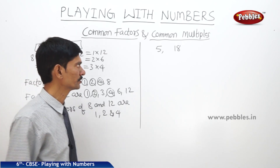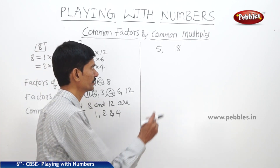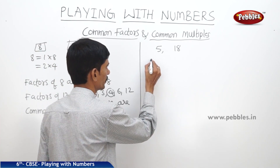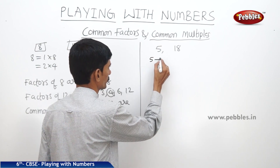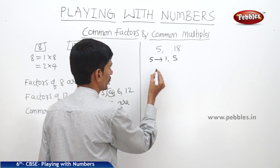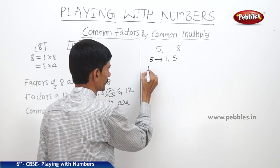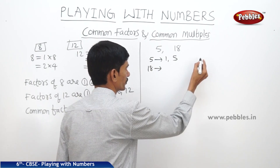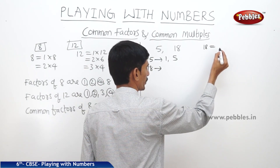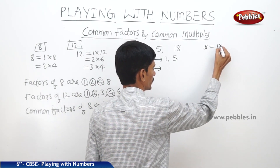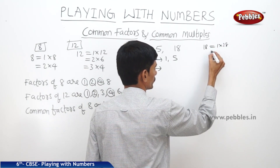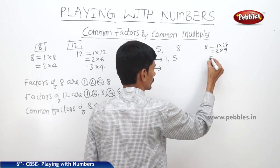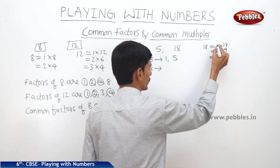Now let us check the two numbers 5 and 18. The factors of 5 are 1 and 5. The factors of 18, written as a product of factors: 1 into 18, 2 into 9, 3 into 6.